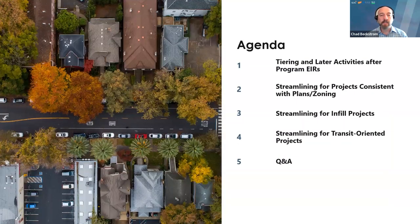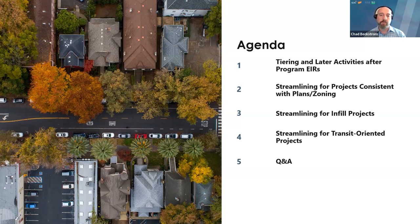Here's our agenda for today. In the last workshop, we provided an overview of CEQA streamlining and focused on various exemptions available for different types of housing projects. Today, we're focusing on streamlining in the context of using prior environmental documents to reduce or eliminate further environmental review under CEQA. We'll talk about tiering and how to use program EIRs for later activities, how to use community plans and general plan EIRs, streamlining for infill projects, and streamlining under SB 375 and SB 743 for transit-oriented projects. We'll also show some tools and worksheets we've developed and answer questions.